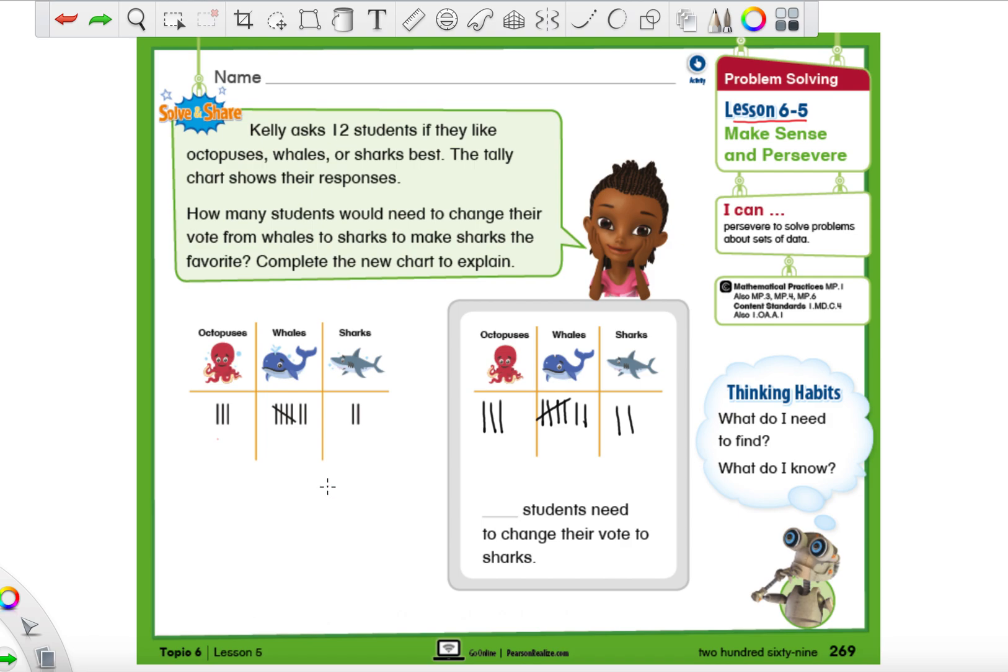All right. So if you're not done that, pause the video just like always, and then hit play when you're done. All right. So let's go over what we have so far. So far we have a tally chart that has three votes for octopus, seven for whales, and two for sharks. Right now we know that whales has the most votes. So we can call this one the favorite. So whales is the favorite in this classroom of votes. So now that we kind of looked at our data a little bit, let's go ahead and read the story problem. It says Kelly asked 12 students if they like octopuses, whales, or sharks the best. The tally chart shows their responses. How many students would need to change their vote from whales to sharks to make sharks the favorite.